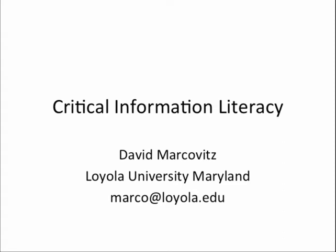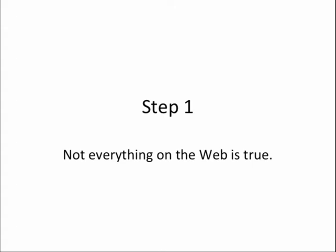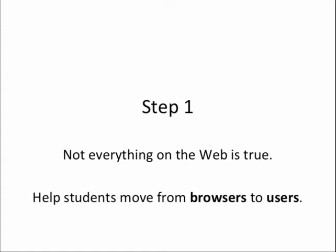Critical Information Literacy, Step 1. Our first goal is to get our students to understand that not everything on the web is true. For this, we are helping our students move from browsers to users. A browser is someone who just goes and flits around for information and doesn't worry too much about it, whereas a user is actually trying to find something useful. We want our students to become users who understand that not everything is true, so that they may need to discard certain things.